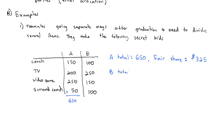Well, B's total, if we add up this, is $600. So according to B, a fair share would be $300 worth of stuff. Okay. Now, each item is awarded to the highest bidder. A bid higher on the couch, B bid higher on the TV, A bid higher on the video game, B bid higher on the surround sound.